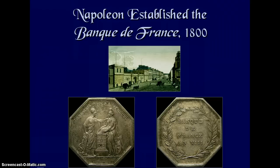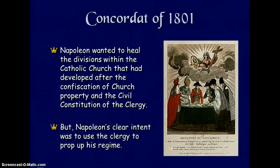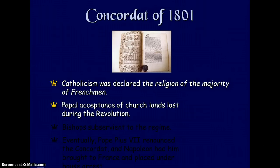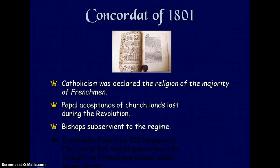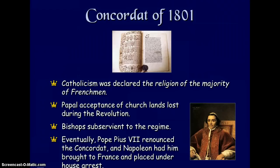Napoleon established the Bank de France in the 1800s. He wanted to heal the divisions within the Catholic Church that had developed after the confiscation of the Church's property and the civil constitution of the clergy, though his clear intent was to use the clergy to prop up his regime. Catholicism was declared the religion of the majority of Frenchmen, with bishops subservient to the regime. Eventually, Pope Pius VII renounced the concordat and Napoleon had him brought to France and placed under house arrest.